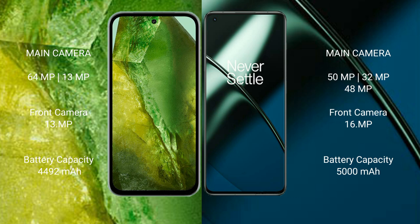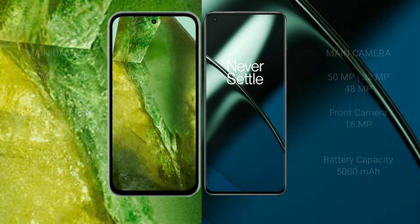Google Pixel 8a has a 4492mAh battery with 30W fast charging support. OnePlus 11 has a 5000mAh battery with 100W fast charging support.